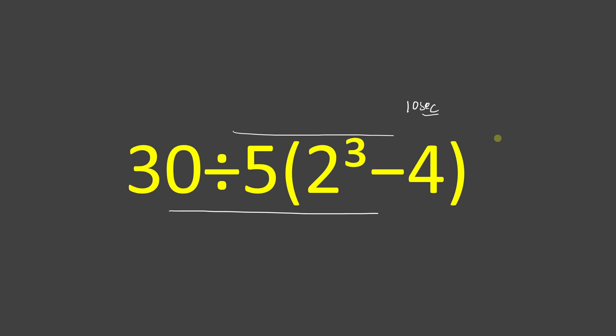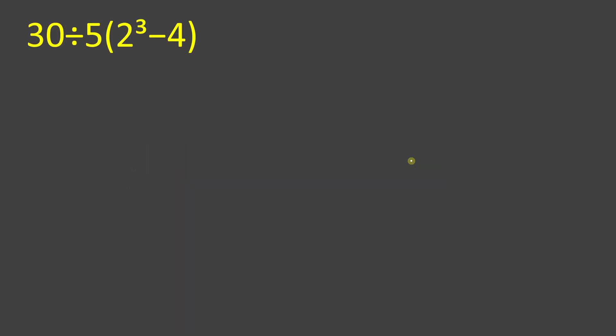Now we are going to solve the math. As we can see, 30 divided by 5, parenthesis 2 to the power 3 minus 4.